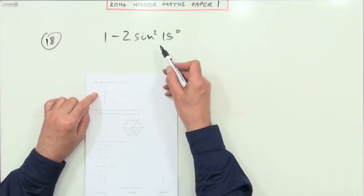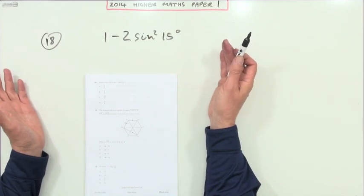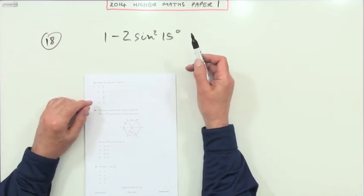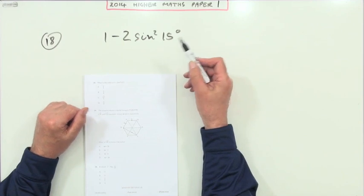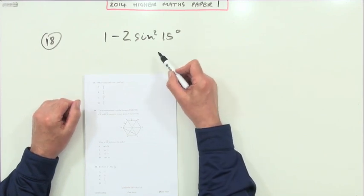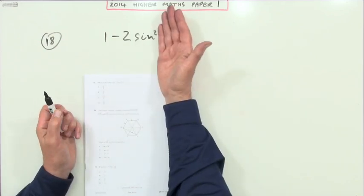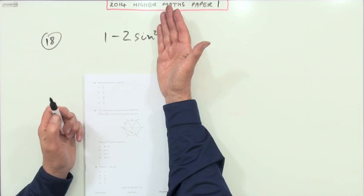Number 18. You look at that and think, oh this must be an exact values question—those are the 30s, 45s, and 60s, and here's a 15. It all depends whether you recognize the pattern. Without that 15 it would look like 1 minus 2 sine squared something, and that should ring a bell.